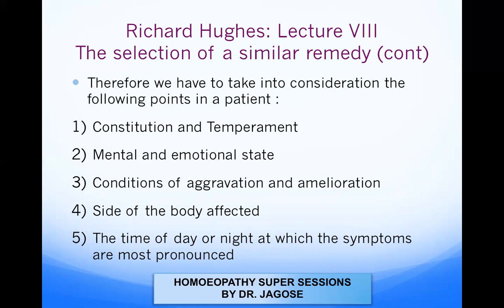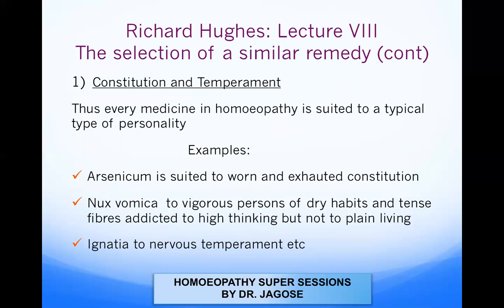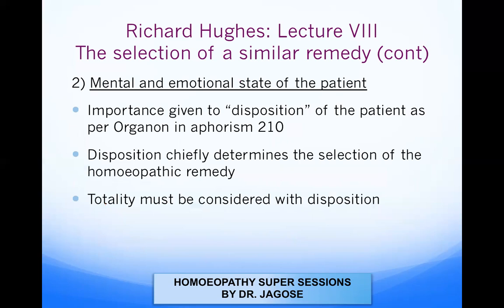The first point is constitution and physical temperament. Richard Hughes says every medicine in homeopathy is suited to a typical type of personality — every medicine has a specific personality profile. For example, Arsenicum is suited to an exhausted constitution; Nux Vomica to rigorous persons of a dry habit and tense fibers addicted to high thinking; and Ignatia to a nervous temperament.